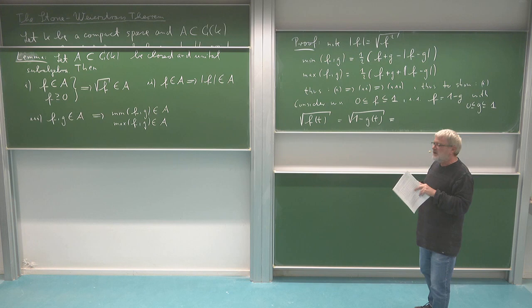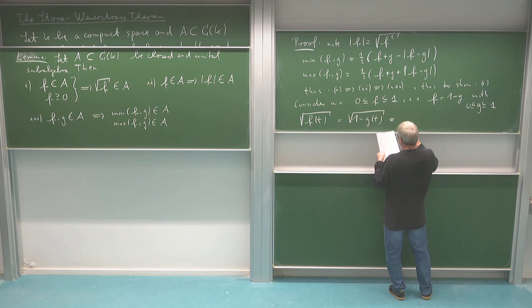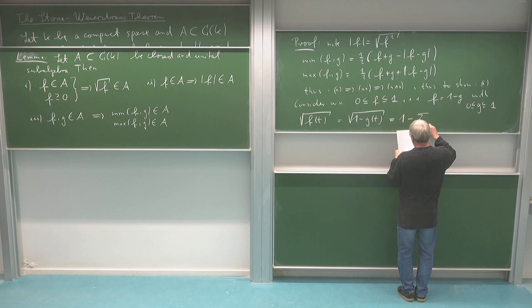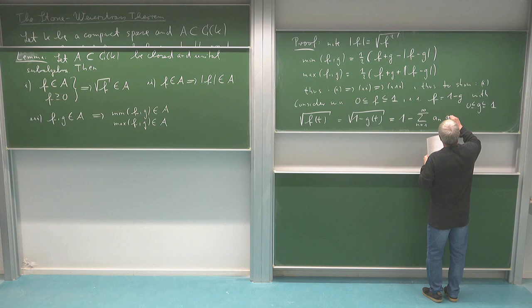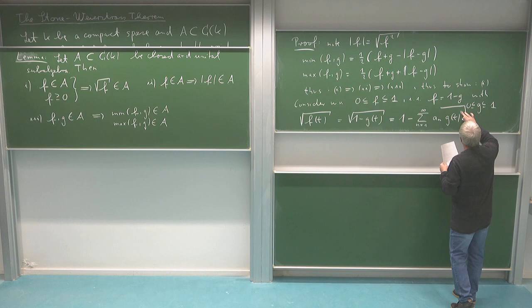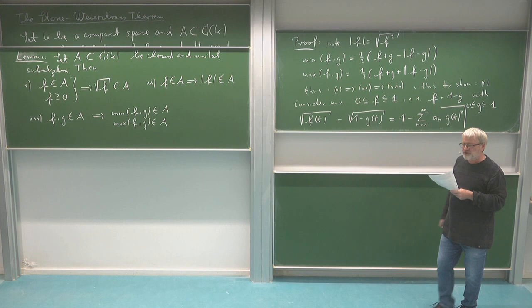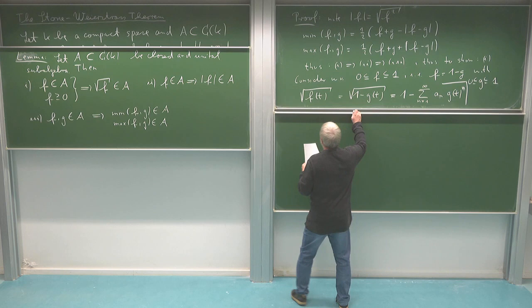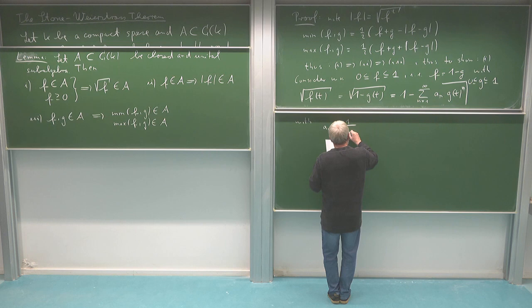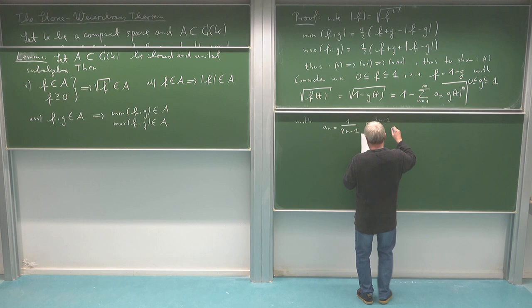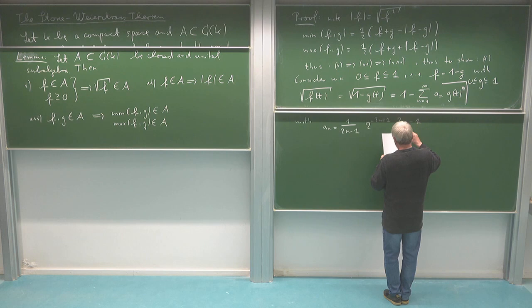I write the Taylor expansion of √(1 − x). This has a Taylor expansion: one minus the sum, and then I get higher-order terms with coefficients aₙ and powers G(t)ⁿ. The coefficients aₙ in the Taylor series of the square root can be calculated explicitly: aₙ equals 1 divided by (2n−1) times 2 to the power (2−2n+1) times the binomial coefficient (2n−1 choose n). The exact form is not important; what matters is that by using Stirling's formula, one can see that |aₙ| ≤ C · n^(−3/2) for some constant C > 0.